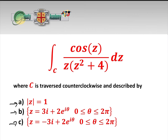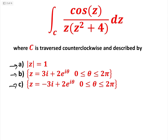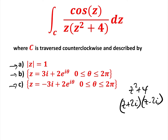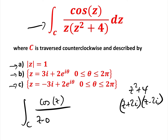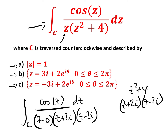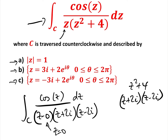Now let's look at the actual question: we've got cos(z) over z(z² + 4). We can factorize z² + 4 as (z + 2i)(z − 2i), so we rewrite the integral as the integral of cos(z) over (z − 0)(z + 2i)(z − 2i) dz around curve C. I like writing z minus 0 to remind you there is a pole at 0. So we have three poles: pole number one at z = 0, pole number two at z = −2i, and pole number three at z = +2i.